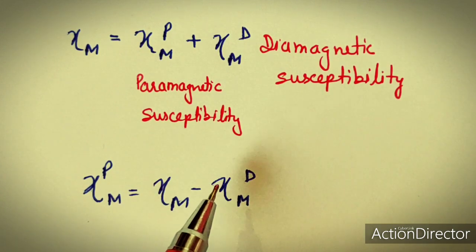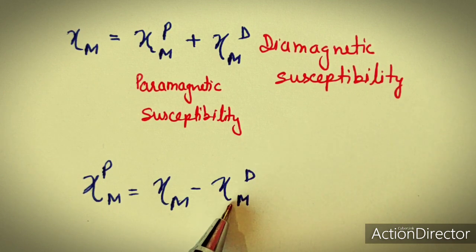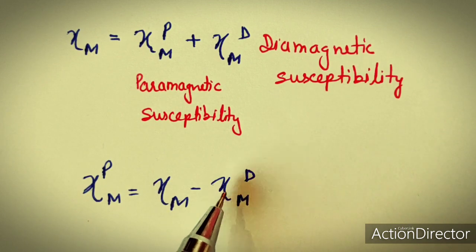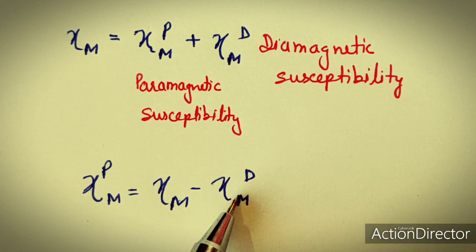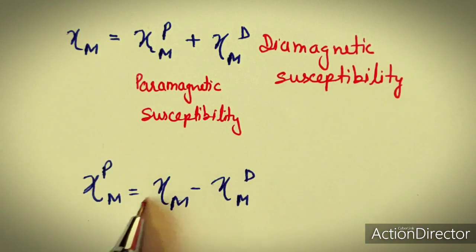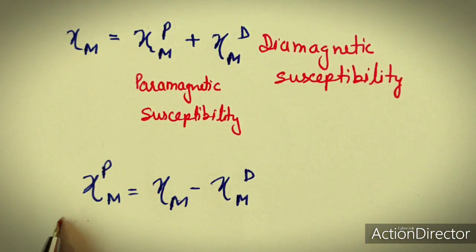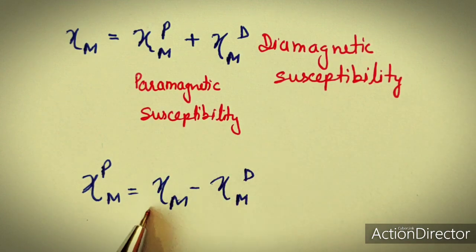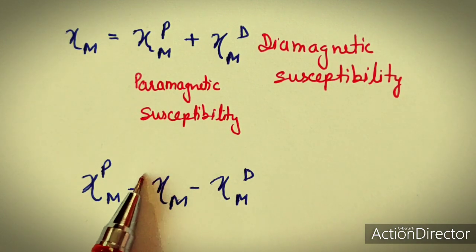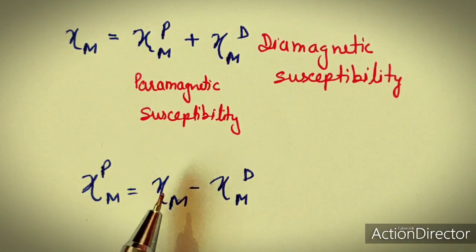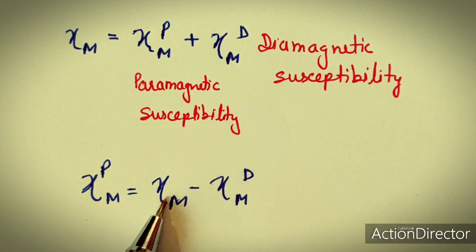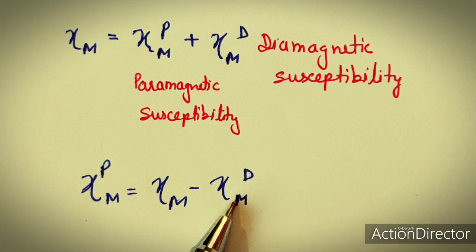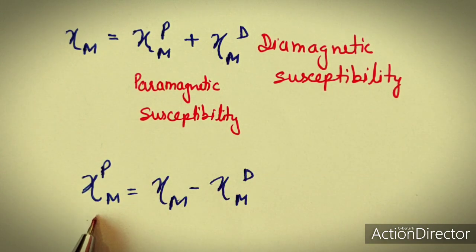The paramagnetic susceptibility equals the total molar susceptibility minus the diamagnetic susceptibility of the substance, which can be obtained from literature. This experimentally determined susceptibility includes both susceptibilities. To get the actual susceptibility, we subtract the diamagnetic susceptibility from the total molar susceptibility to get the paramagnetic susceptibility.